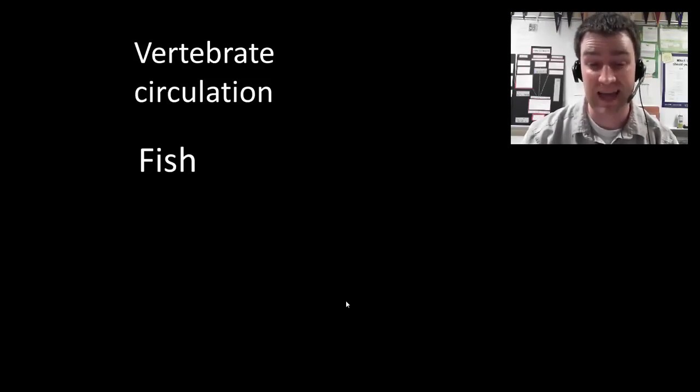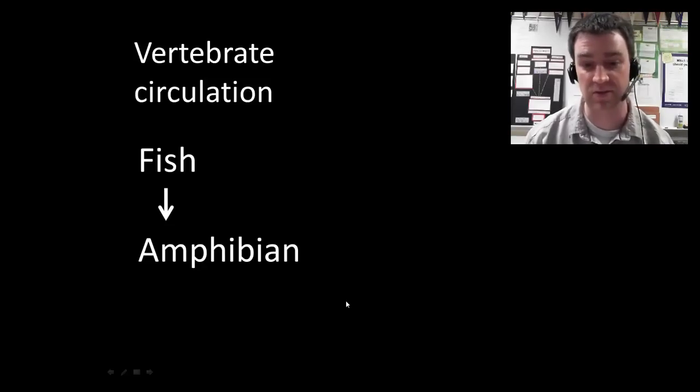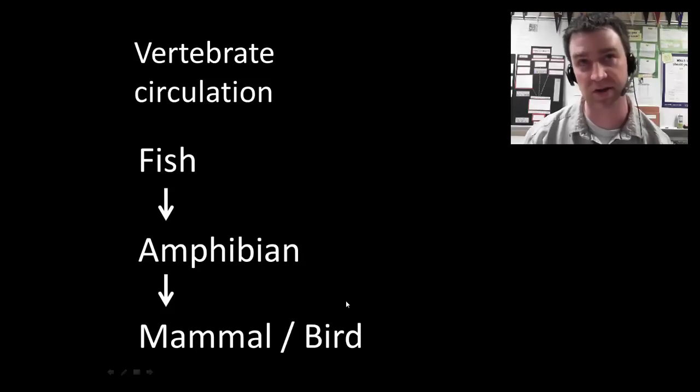That later land vertebrates, we think the first land vertebrates were the amphibians. These include things like frogs and salamanders. How they have changed in order to improve upon that problem with the fish system. As it turns out, it creates a solution, but it also creates a new problem. That later mammals and birds are going to evolve to fix.